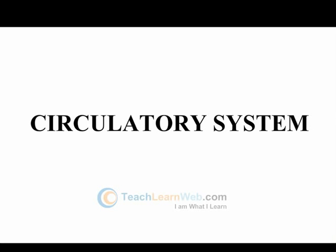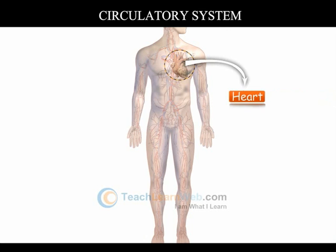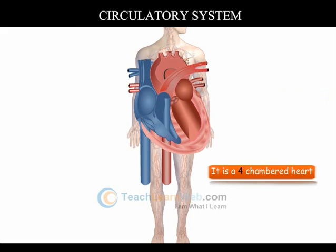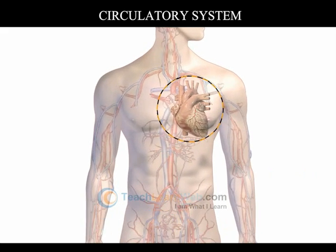Circulatory System. It consists of a central pumping organ called the heart. The heart in the human body is four-chambered. The heart beats continuously to pump blood throughout the body. It is located in the chest cavity and tilted towards the left side.